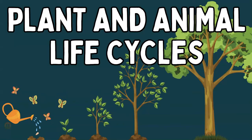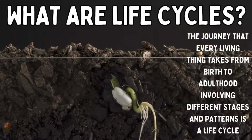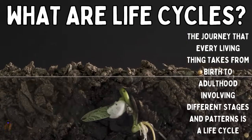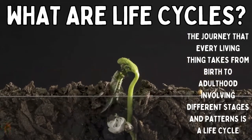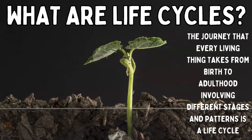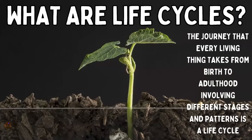Even though the life cycles of different organisms may look different, they all follow a pattern. But first, what's a life cycle? Well, a life cycle is a journey that everything takes from the moment it's born or hatched until it grows up and becomes an adult. It's like the story of their life with different chapters and stages.